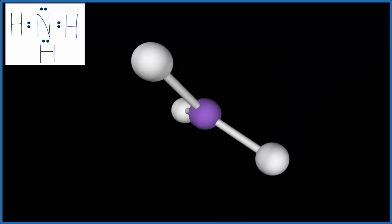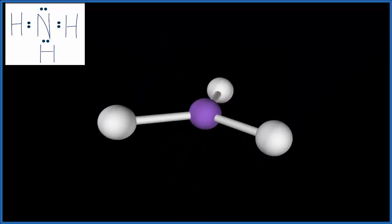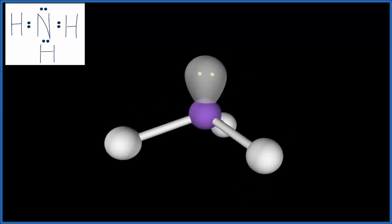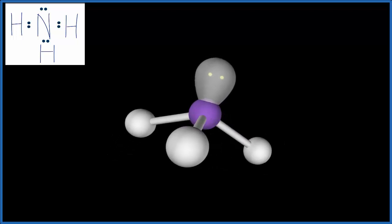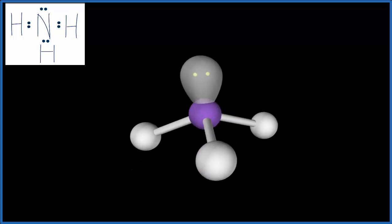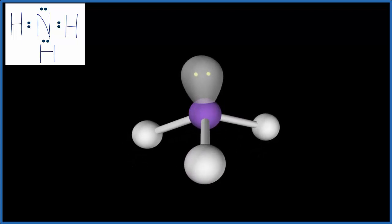You see they spread out to be as far away as they can from each other. Then we're going to put that lone pair on, put that in the middle. That pushes everything down, and that gives us a molecular geometry of trigonal pyramidal. The lone pair here pushes down. It repels a bit more than these hydrogen atoms. That's why we get this pyramidal shape.